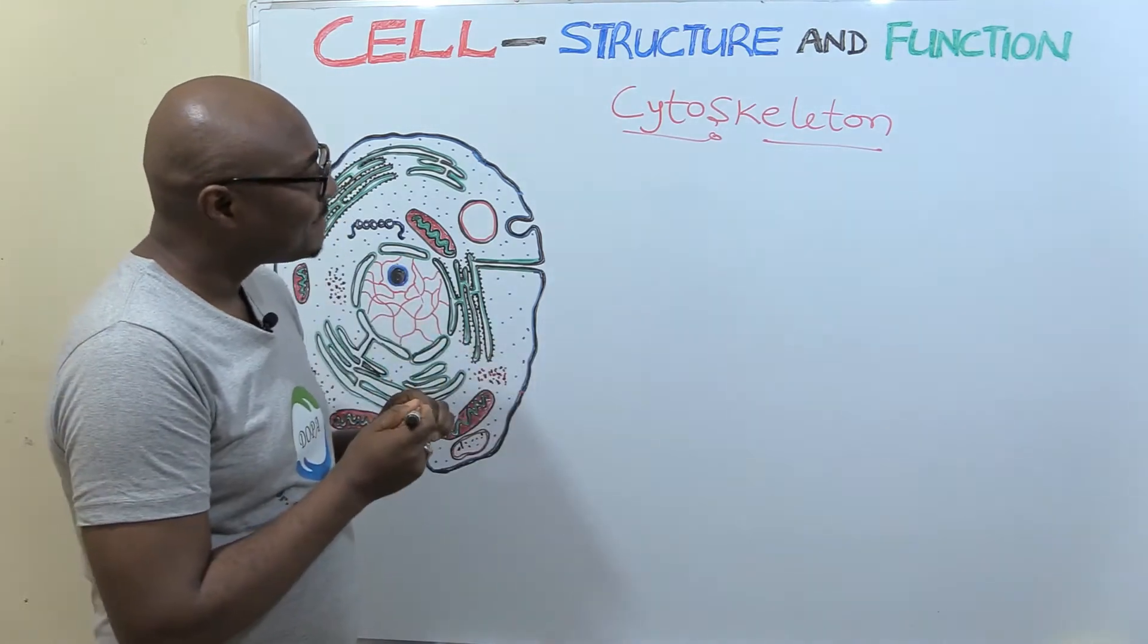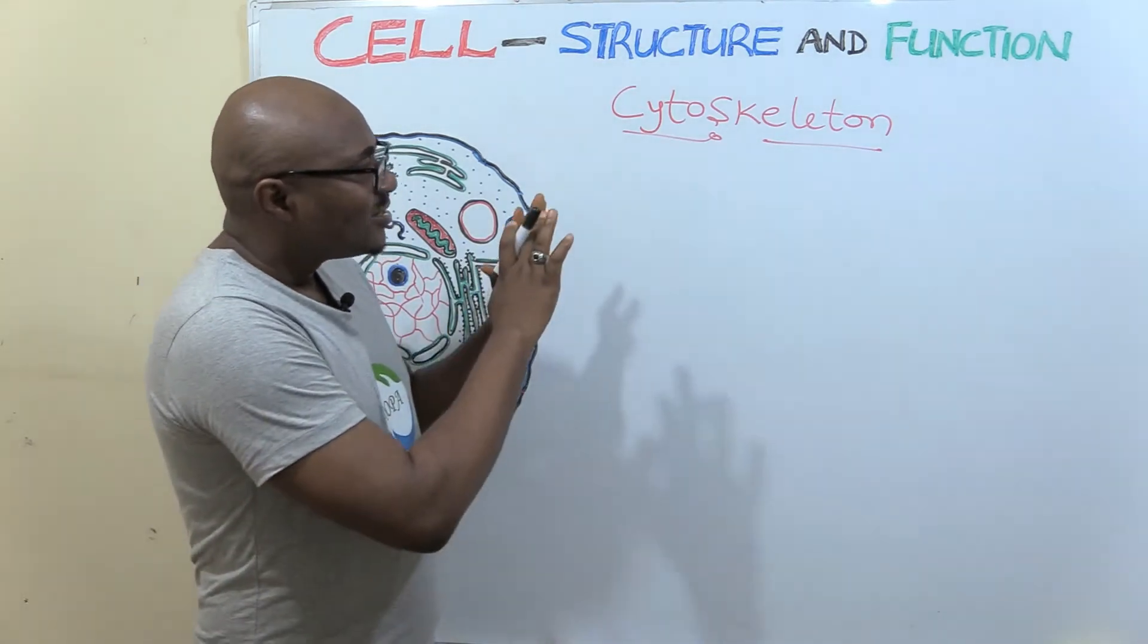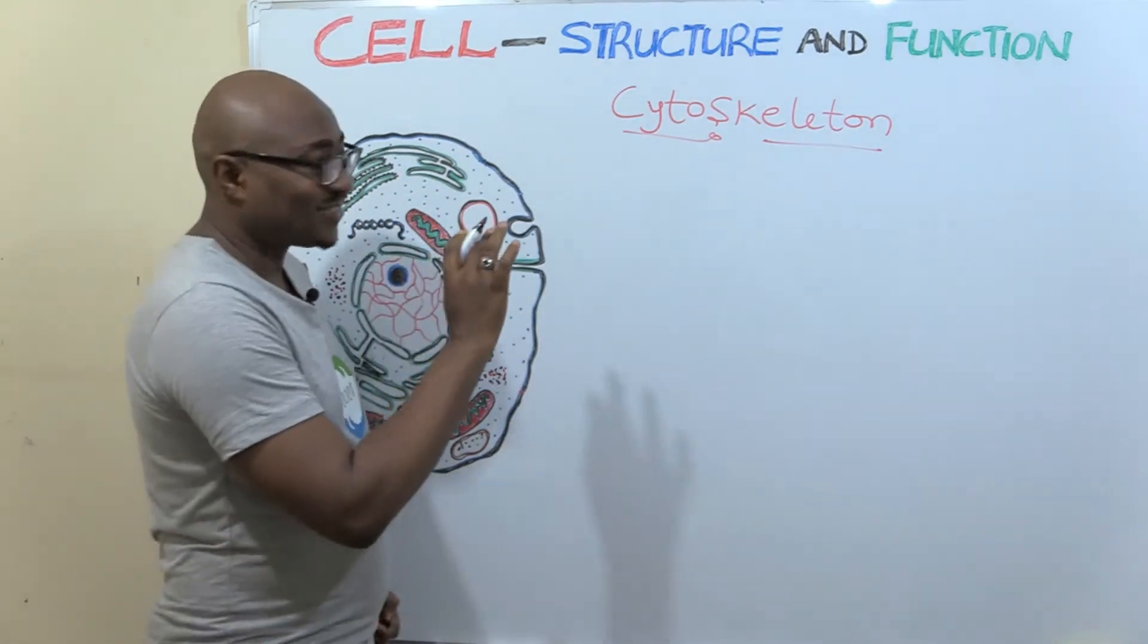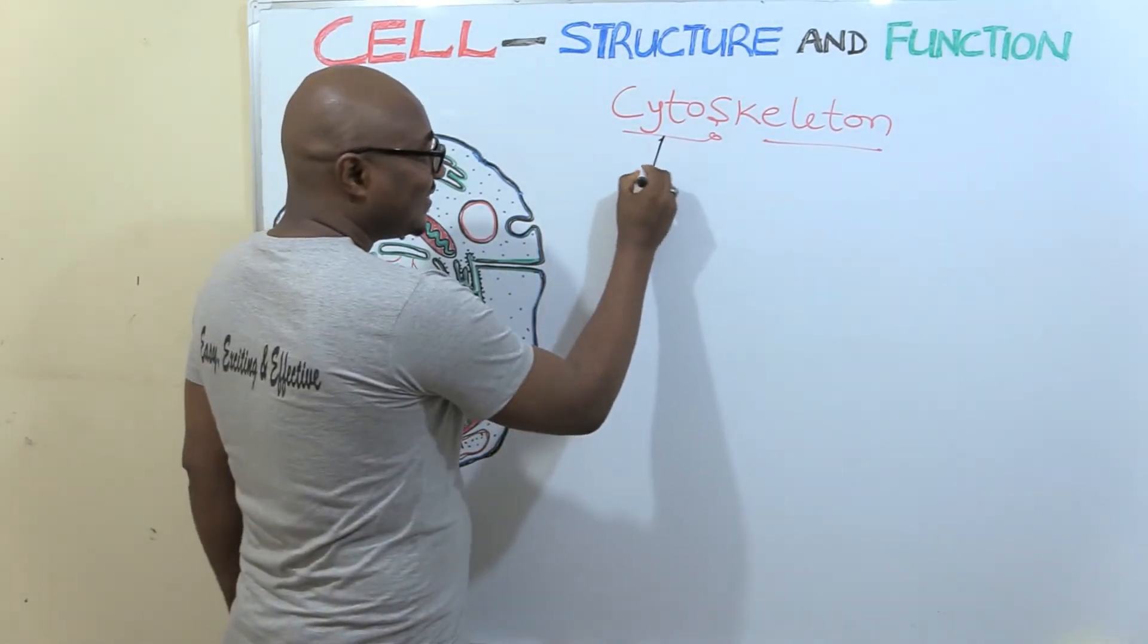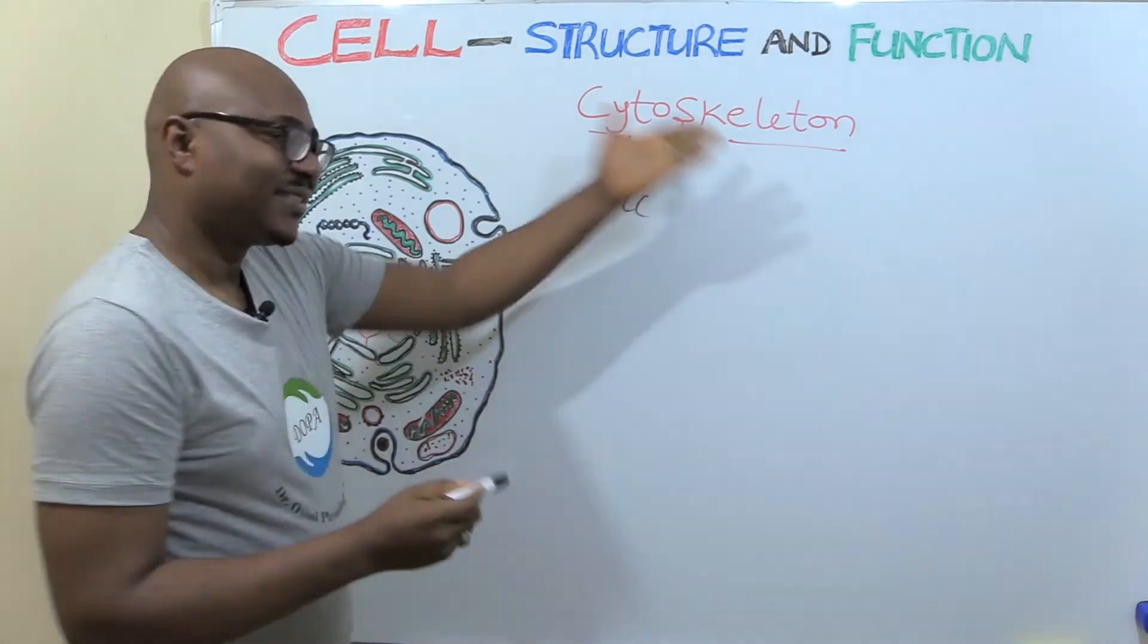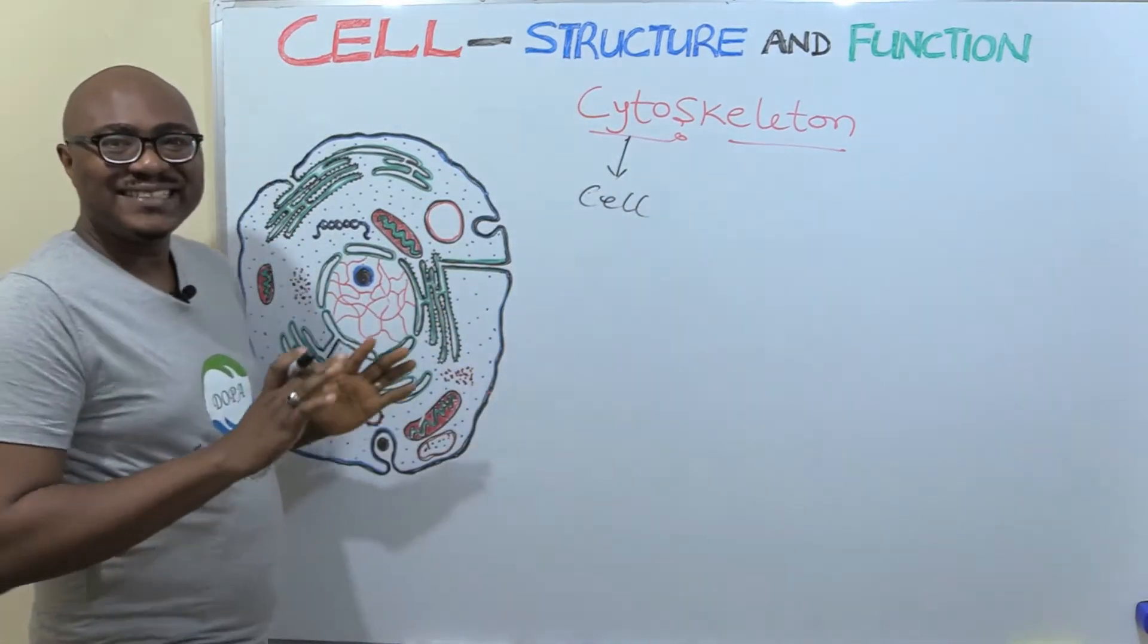So today we're going to be dealing with cytoskeleton. What is cytoskeleton? Always look at the words first. Cytoskeleton has to do with cell, so then skeleton, that means the skeleton of the cell.